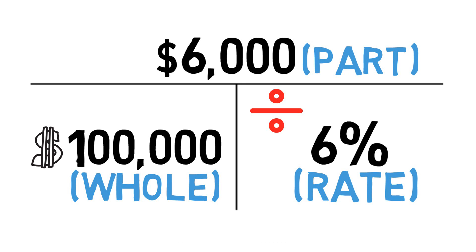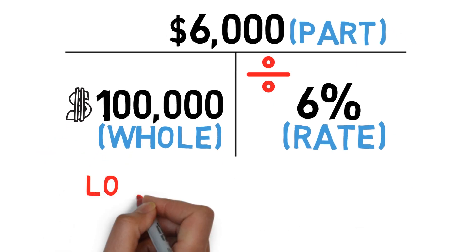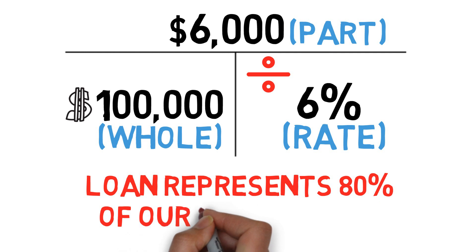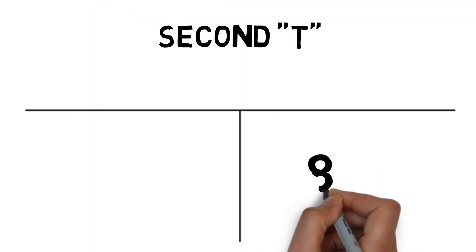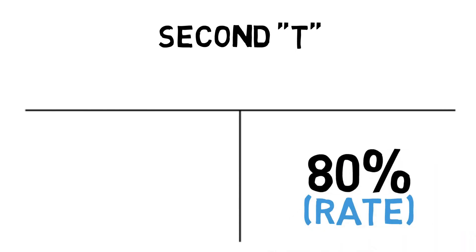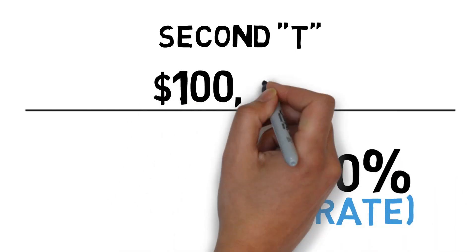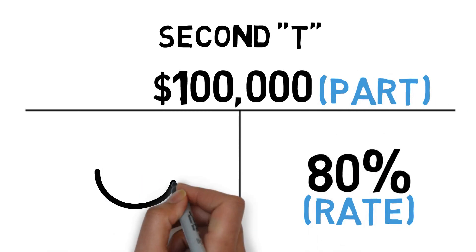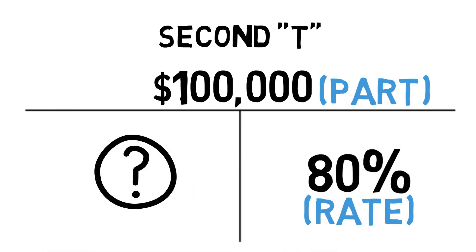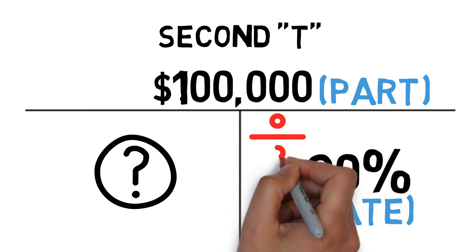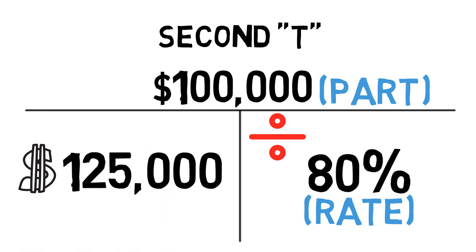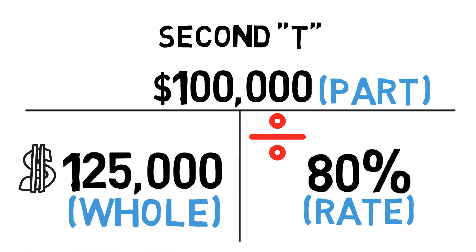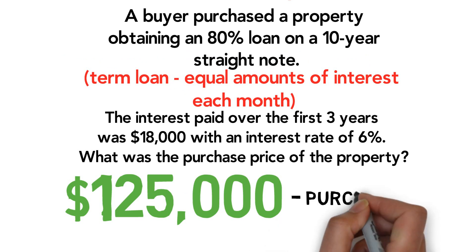The loan represents 80% of our total value, so now we go to our second T. We know 80% goes in the bottom right for the percentage. The $100,000 loan goes on top for the part, because the loan amount represents part of the total value. We take $100,000 and divide by 80%, and that gives us a total value of $125,000. That would be our answer.